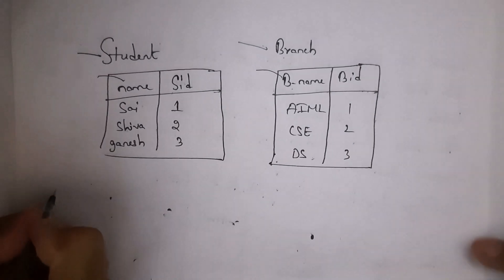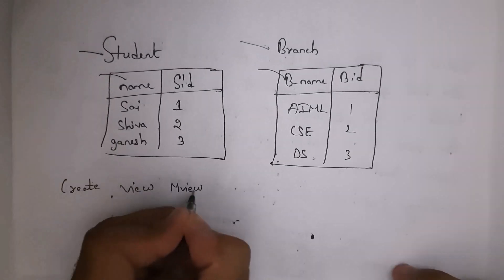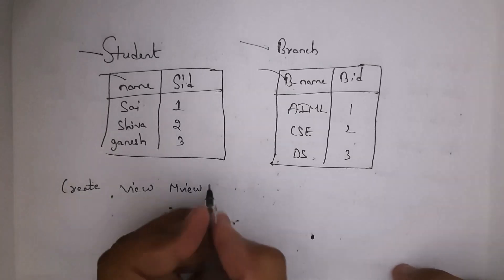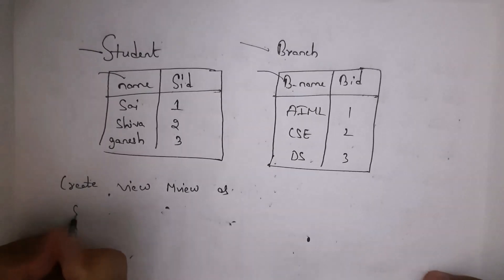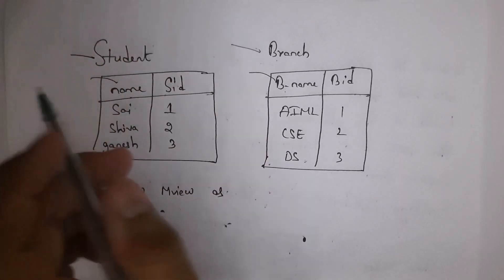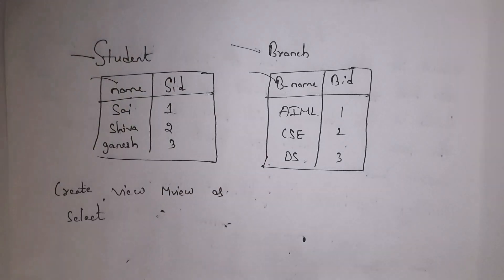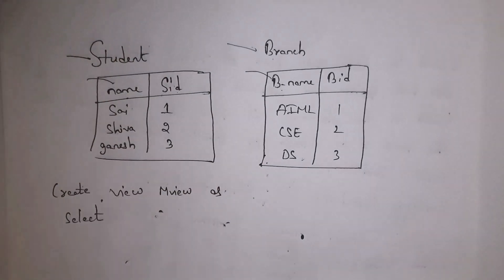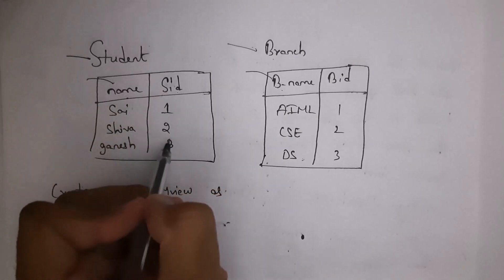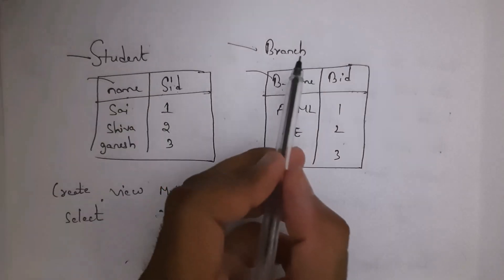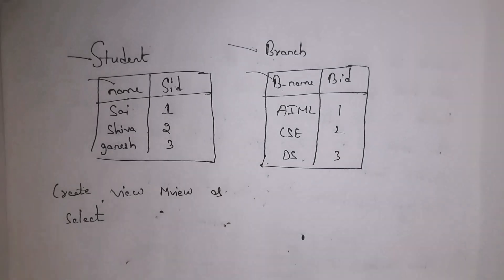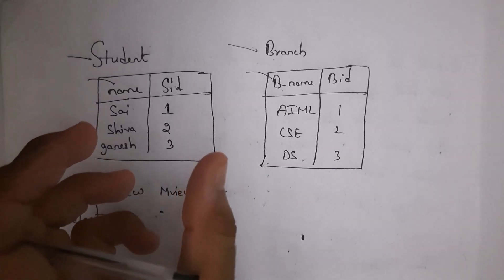Write: CREATE VIEW mview AS SELECT. In order to create a view from multiple tables, there must be one common column. In the student table the SID column has values 1, 2, 3. Similarly in the branch table the BID column has values 1, 2, 3. To create a view from multiple tables there must be some matching data.